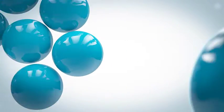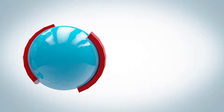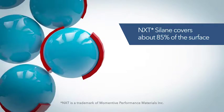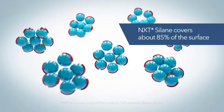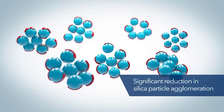When NXT silane is added at approximately 8% of the silica loading, about 85% of the silica surface can be covered by the silane. This enables the particles to remain discrete, allows for improved dispersion, and can result in lower viscosity of the compound.